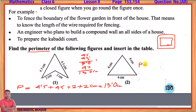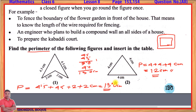The boundary is the side. 4 plus 4 plus 4 — I am going to write centimeters. 4 plus 4 is 8, plus 4 is 12. This is the perimeter: 12 centimeters. And figure number 1 is 13 centimeters. Figure number 2 is 12 centimeters.